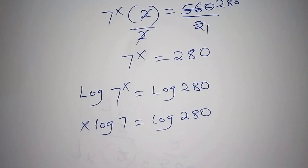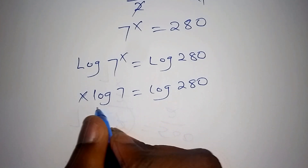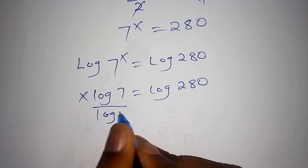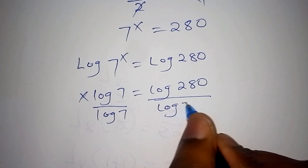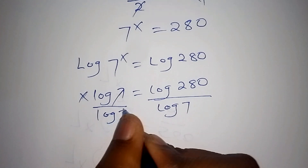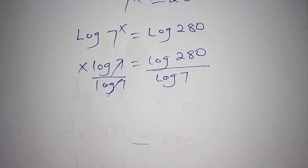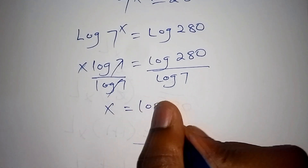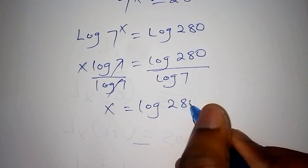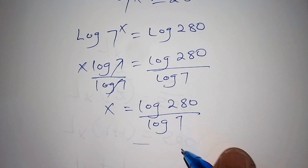In this case, for us to remain with x on this side, we shall divide both sides by the log of 7 — this side also by the log of 7 — so that the log of 7 and the log of 7 shall cancel each other. Now we shall have x is equals to the log of 280 all over the log of 7.